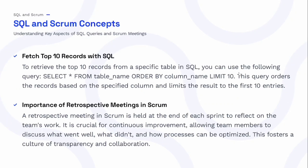The next set covers SQL and Scrum concepts. To fetch the top 10 records in SQL, we use: SELECT * FROM table_name ORDER BY column_name LIMIT 10 — this fetches the first 10 entries. Regarding the importance of retrospective meetings in Scrum: a retrospective is held at the end of each sprint to reflect on the team's work. It's crucial for continuous improvement, allowing the team to discuss what went well, what didn't, and how processes can be optimized, fostering transparency and collaboration.